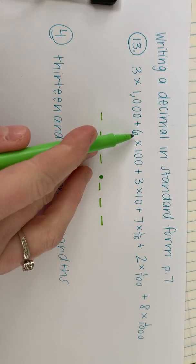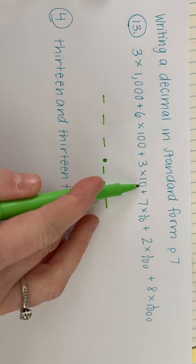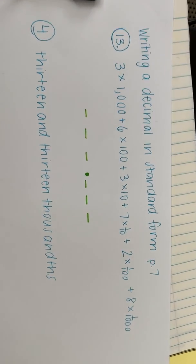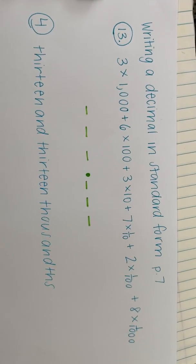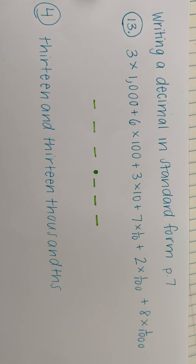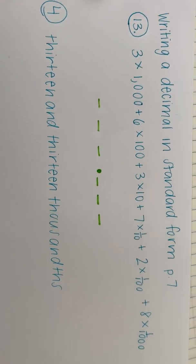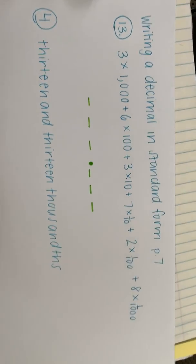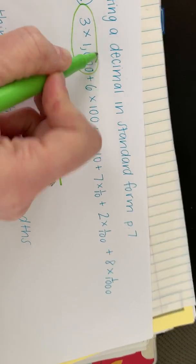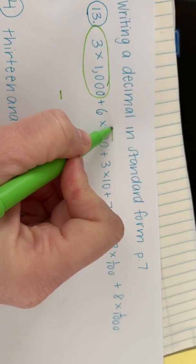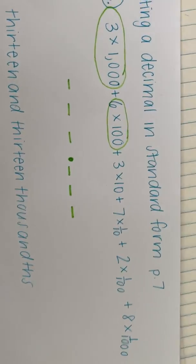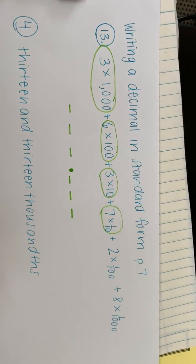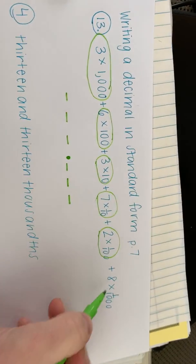So then look up at your problem. We have 3 times 1000 plus 6 times 100 plus 3 times 10 plus 7 times 1 tenth plus 2 times 1 hundredth plus 8 times 1 thousandth. So you can see that there's two numbers being multiplied and then adding it to two more numbers being multiplied, adding it to two more numbers being multiplied. So I want you to take your pencil and circle the two numbers being multiplied. So we'll start here with 3 times 1000 plus 6 times 100. So circle 6 times 100 plus 3 times 10. Circle that one. Plus 7 times 1 tenth. Circle that. Plus 2 times 1 hundredth plus 8 times 1 thousandth.